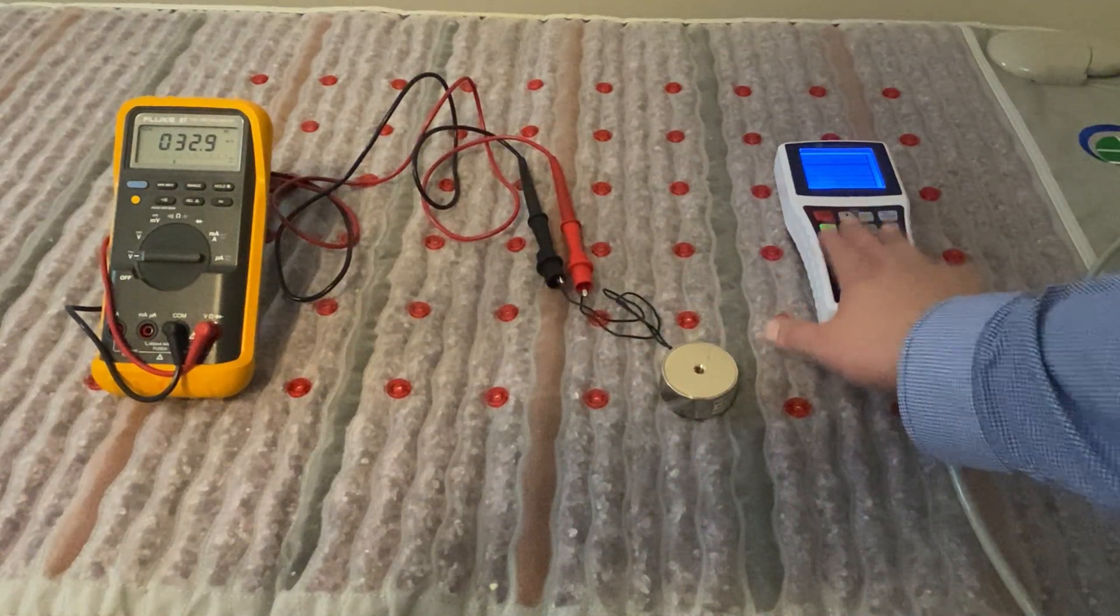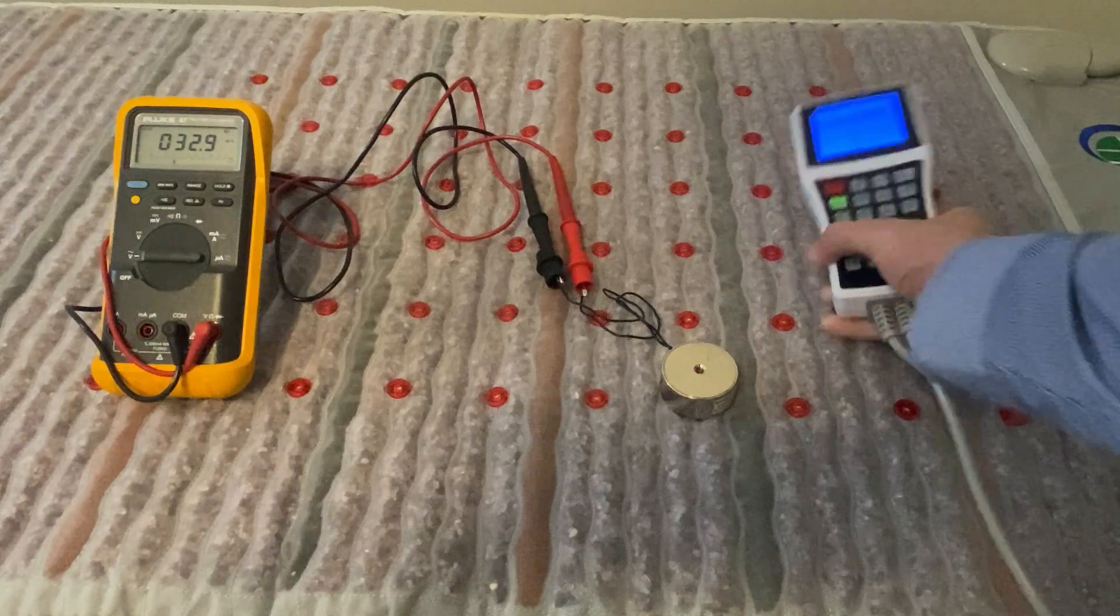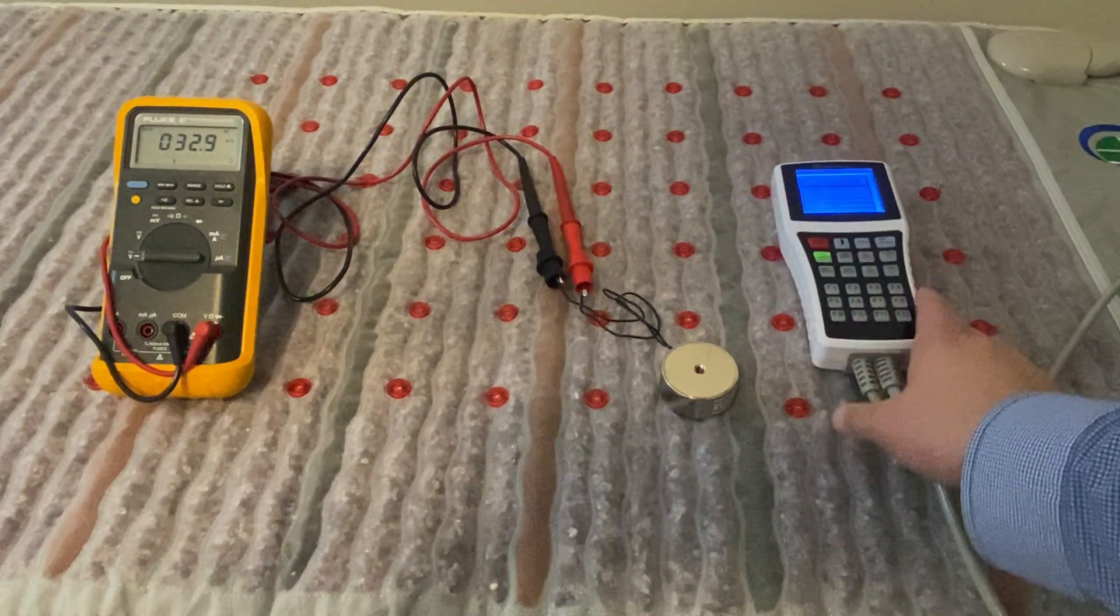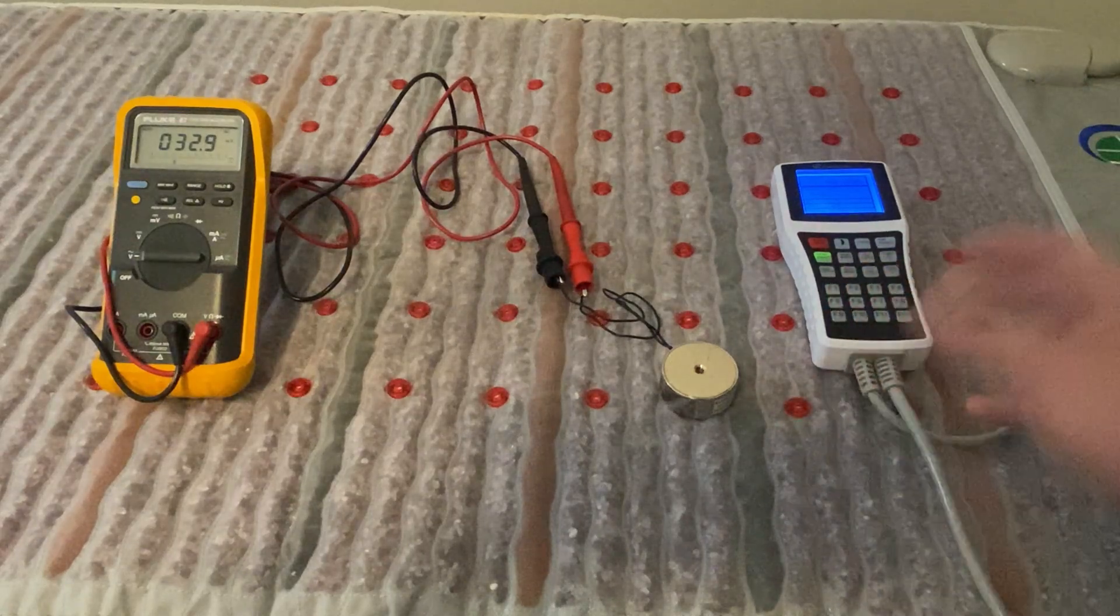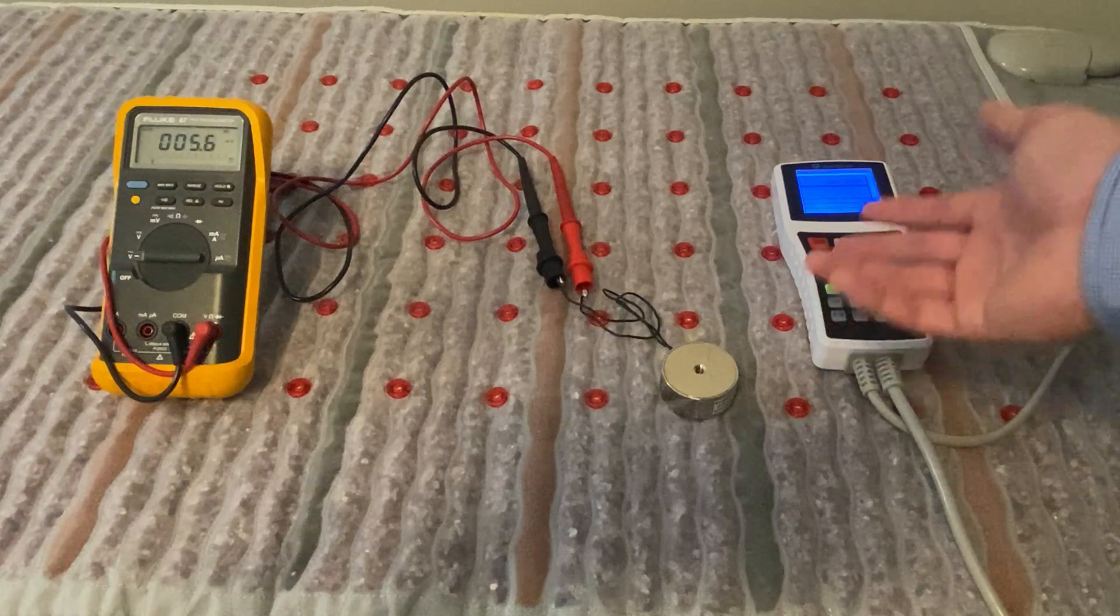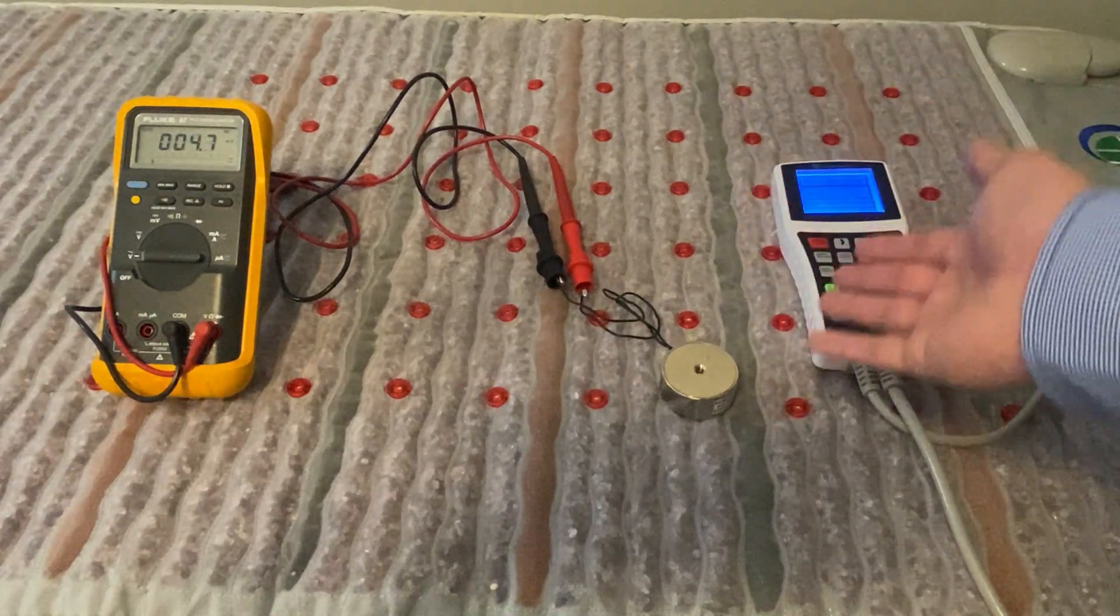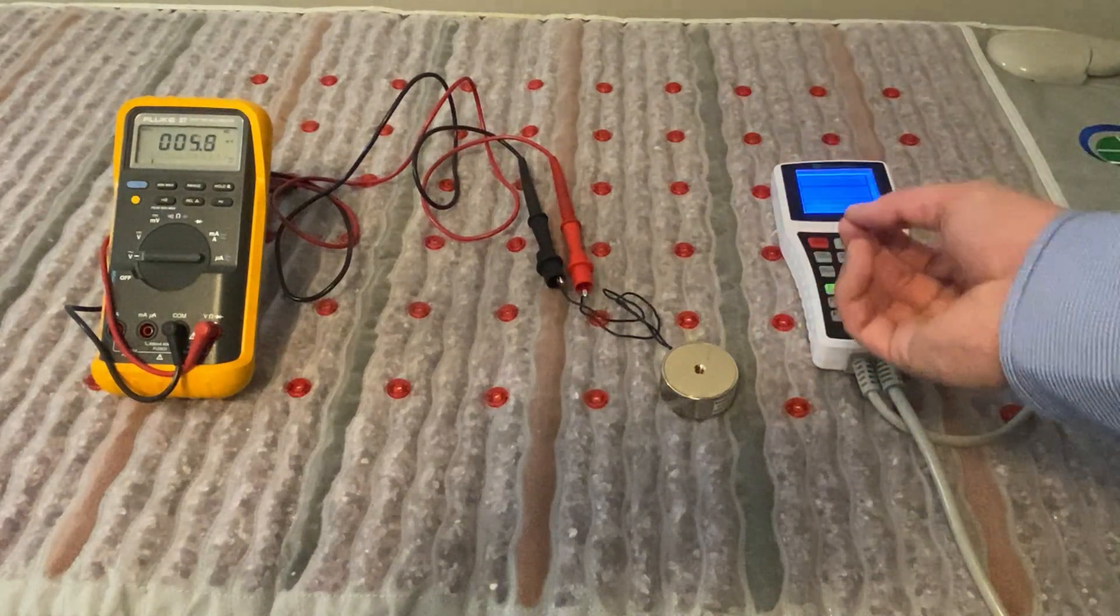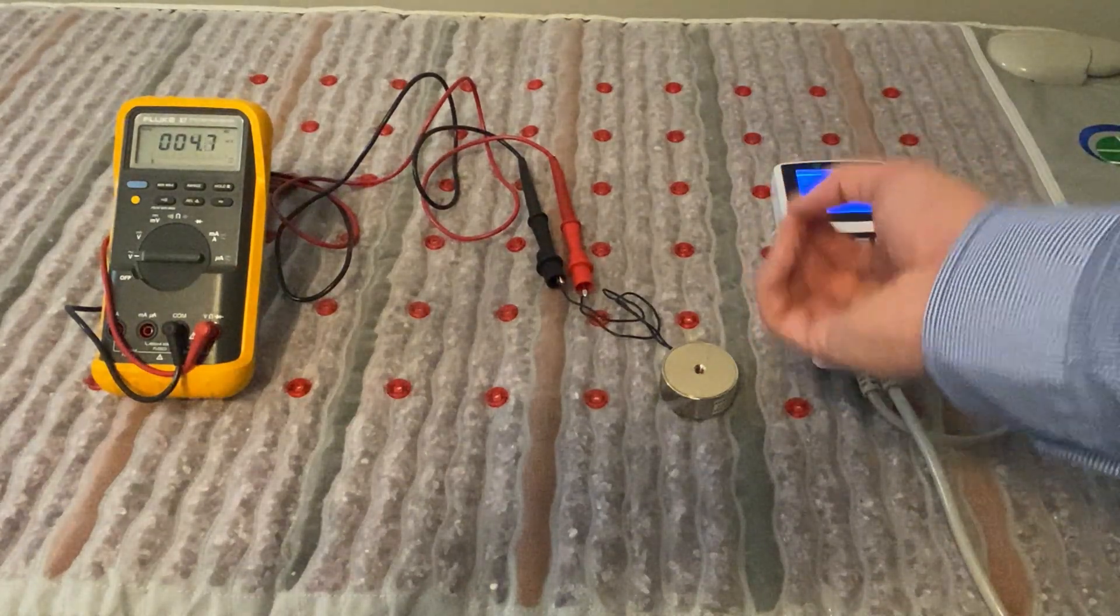You can set these individual frequencies if you want on the multi-wave controller by using these functions like I was here. There's also our very easy to use preset programs. You can just click any of these, and it's going to run through a series of different PMF programs with different frequencies, intensities, and pulse durations, all intelligently designed depending on exactly what you're looking for.